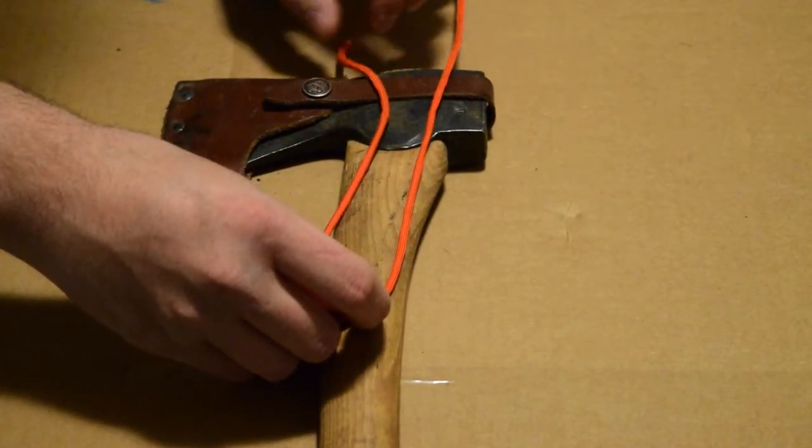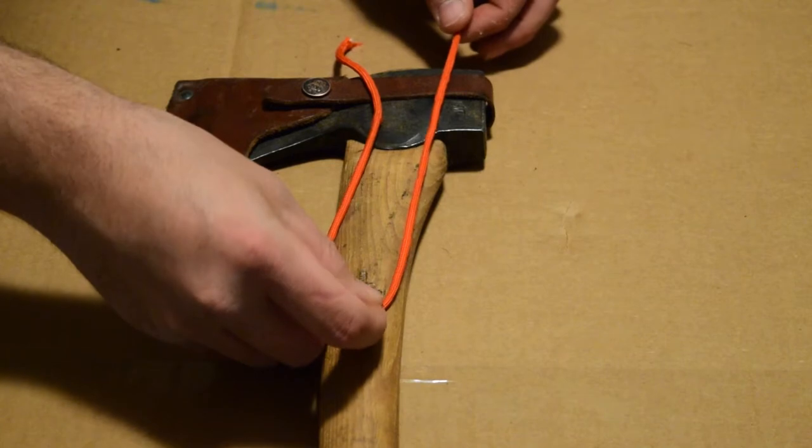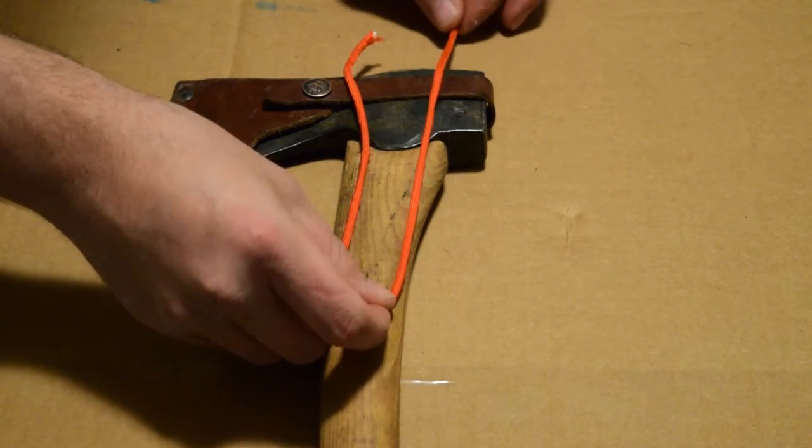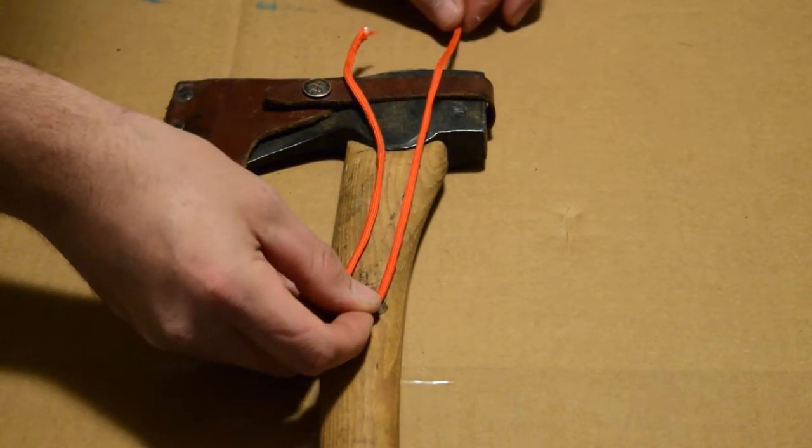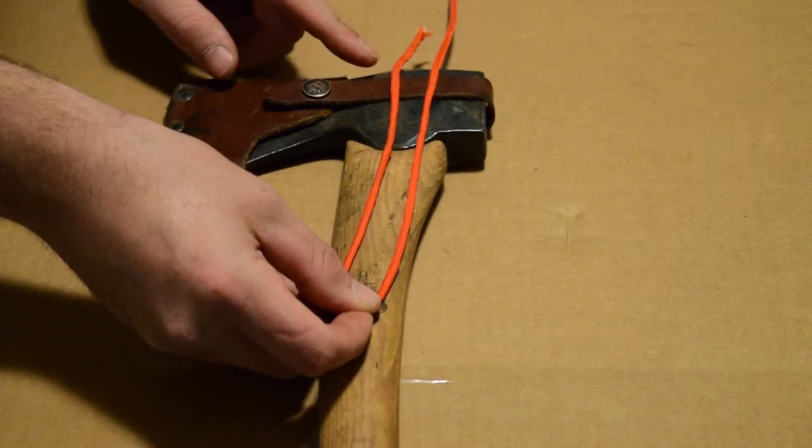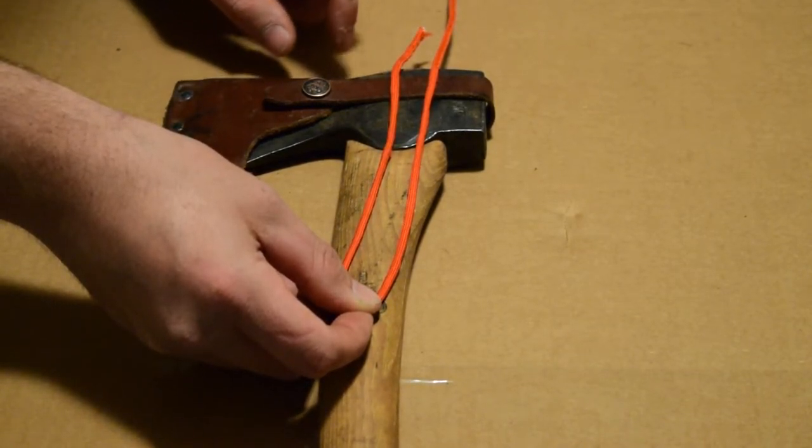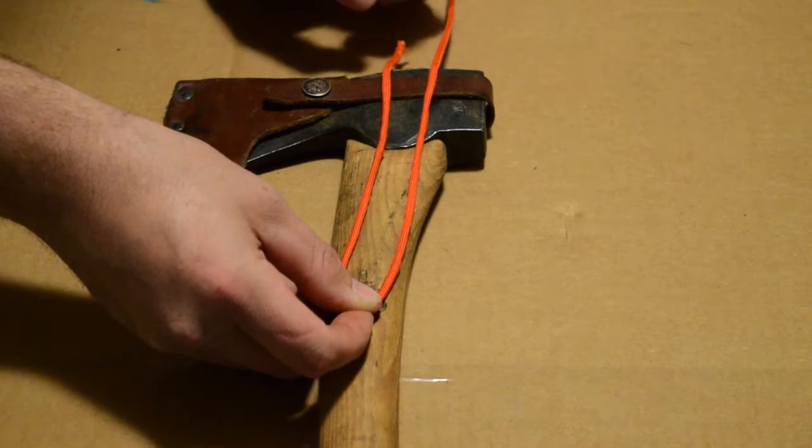And then what we're going to do is all your remaining paracord, you kind of want to pull some of that back while keeping that loop. So you have about one inch of the tail of your paracord sticking above the head of the axe.